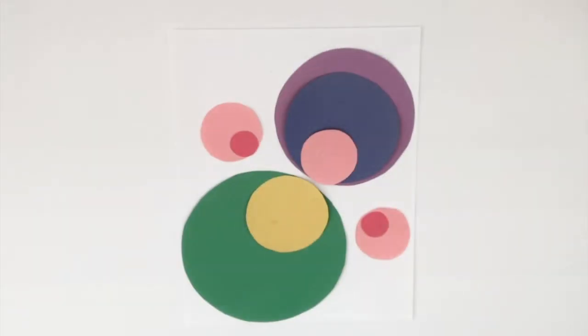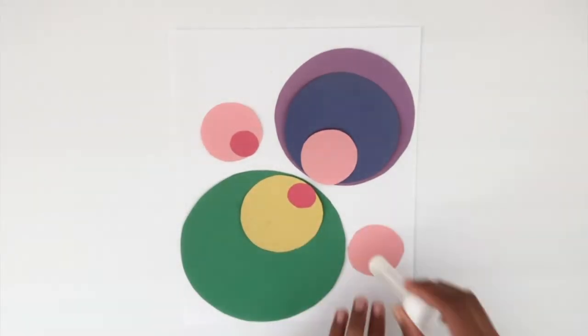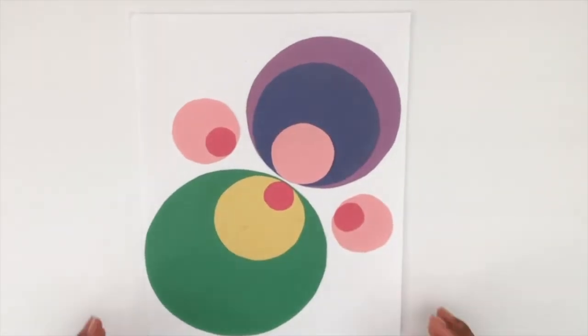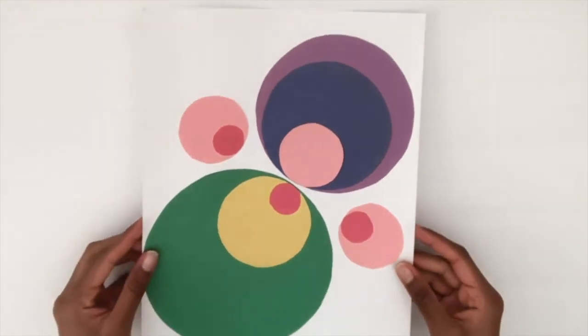This is the design I ended up choosing. But I felt like something was missing so I decided to add a small red circle into the yellow circle. And then, after you're done, all you have to do is glue them down. And now you're done with your art masterpiece.